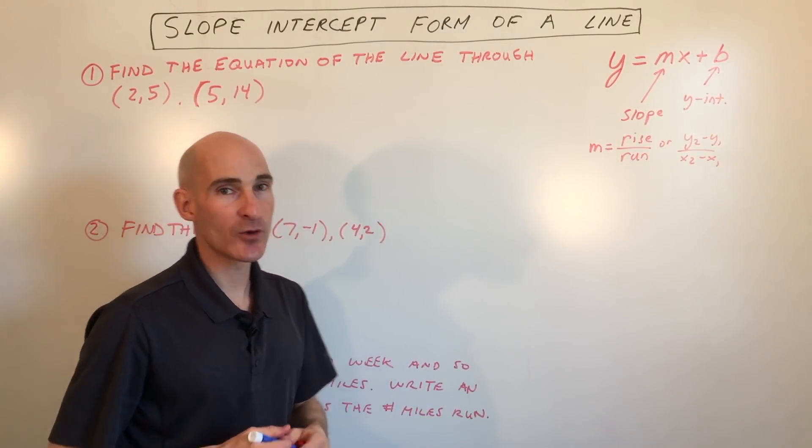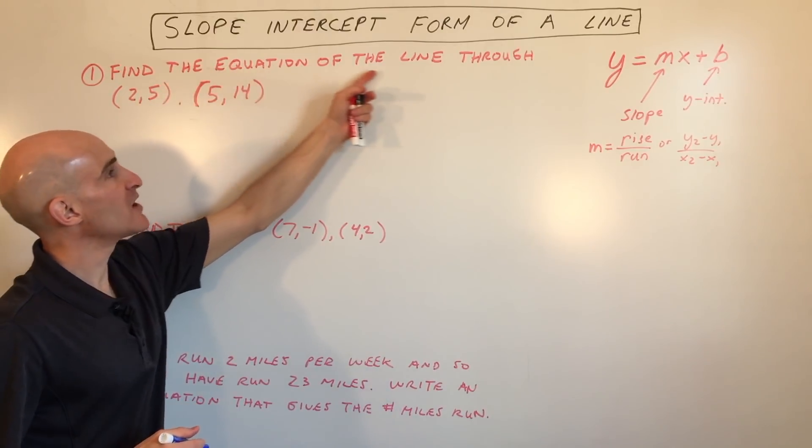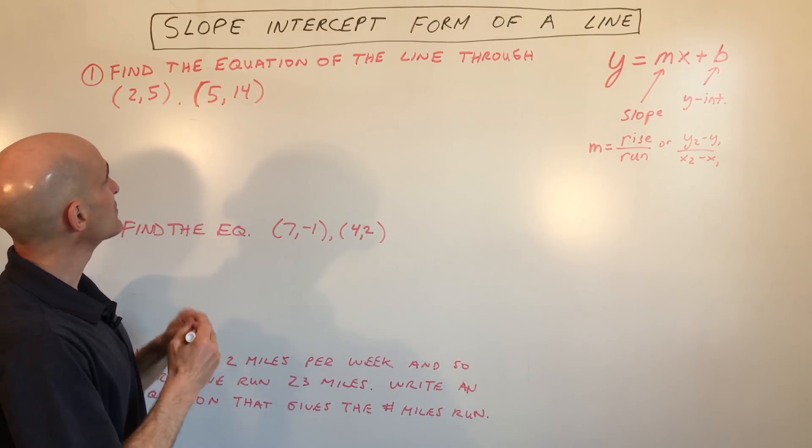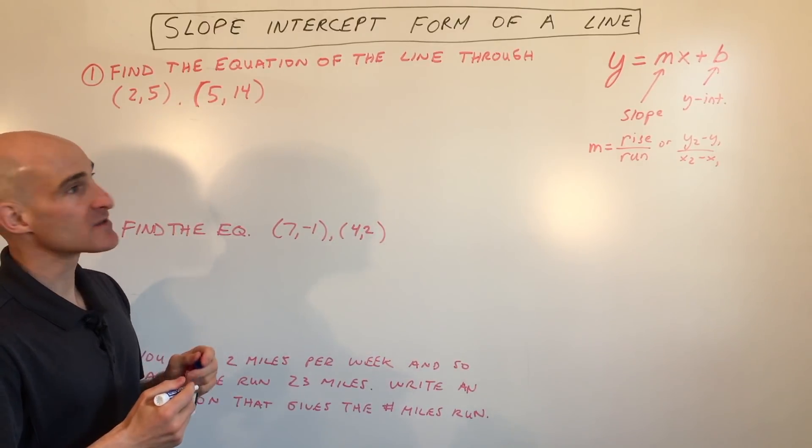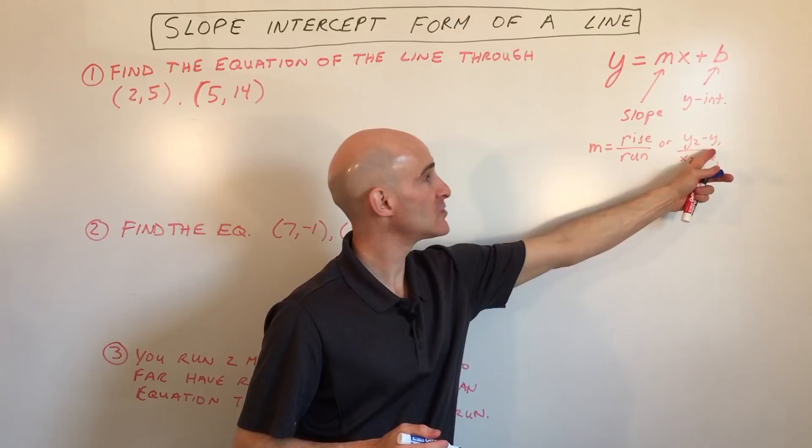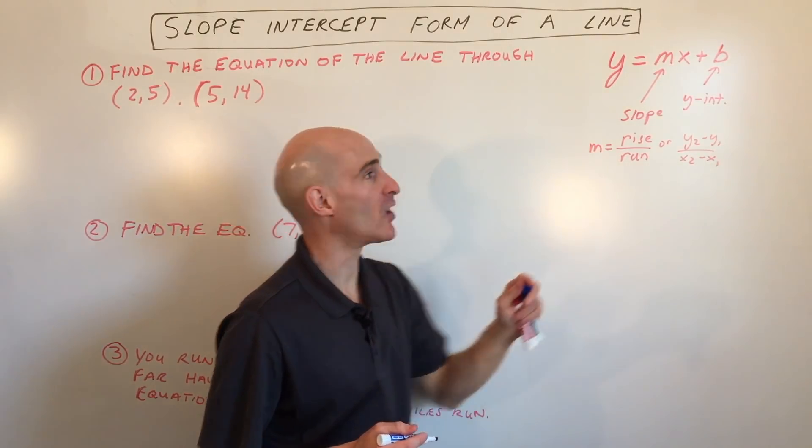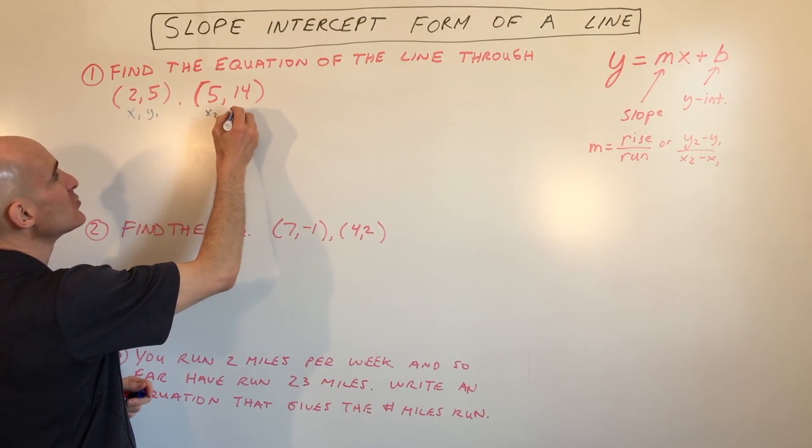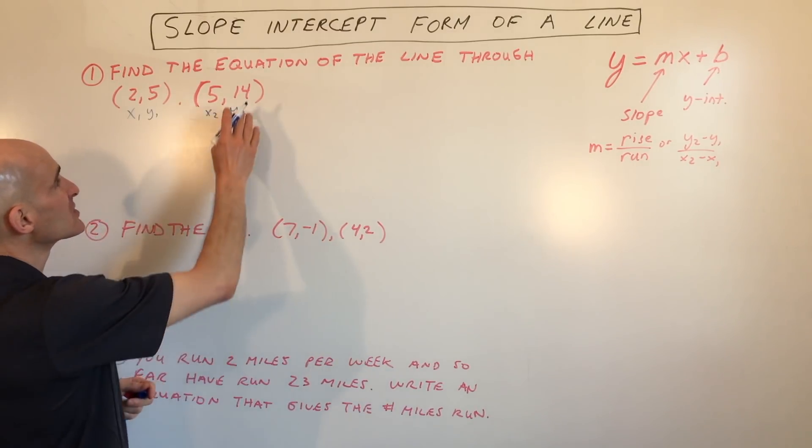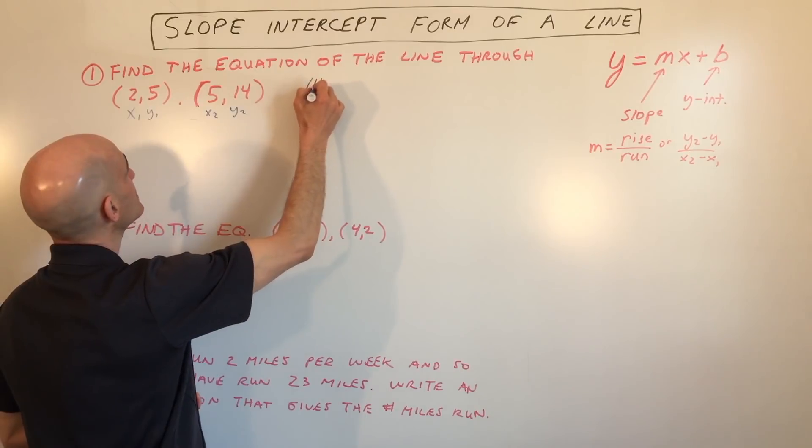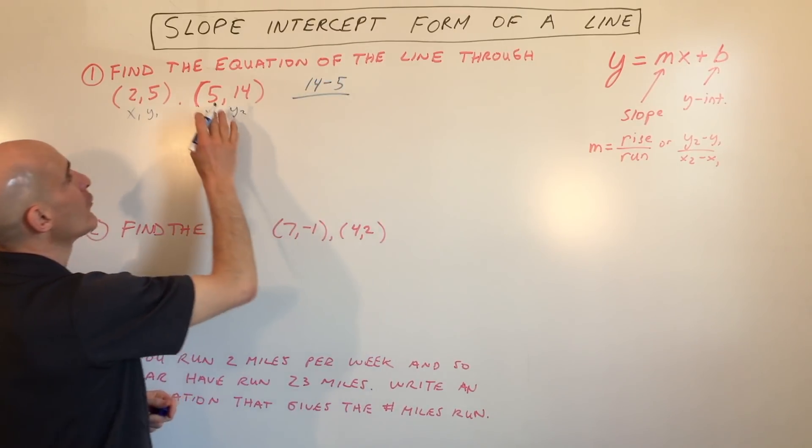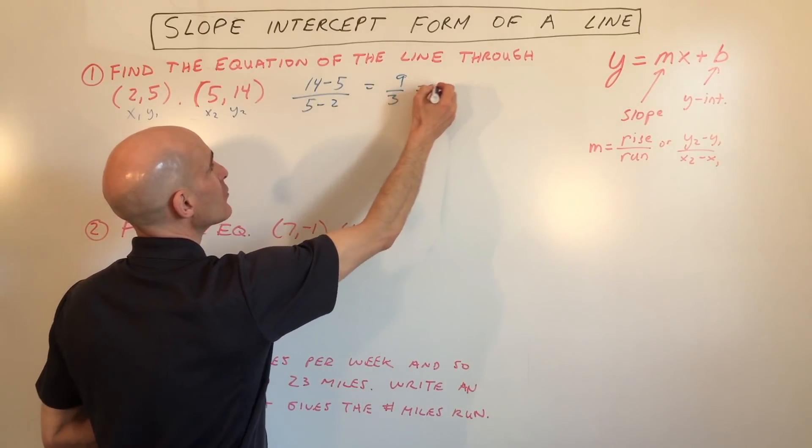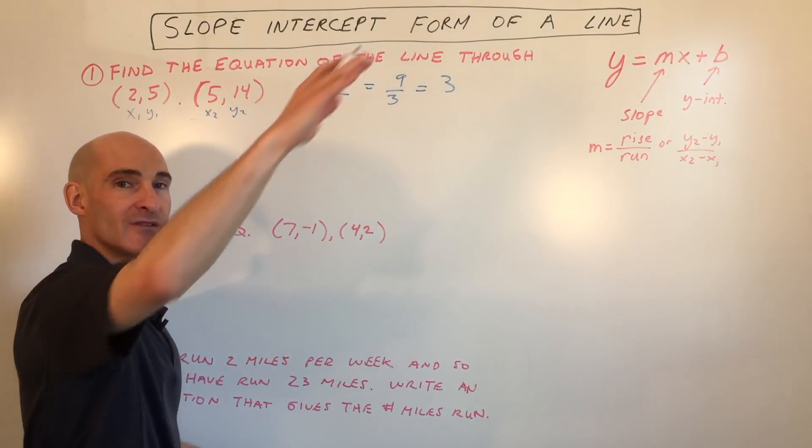Let's take a look at some examples. Here it says find the equation of the line through the points (2,5) and (5,14). We're going to find the slope using the slope formula y2 minus y1 over x2 minus x1. So this is point number one, x1, y1, and this is point number two, x2, y2. We subtract 14 minus 5 over 5 minus 2, so we get 9 over 3, which equals 3. That's our slope, our rate of increase.